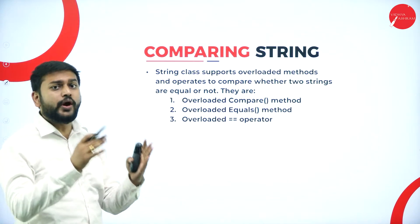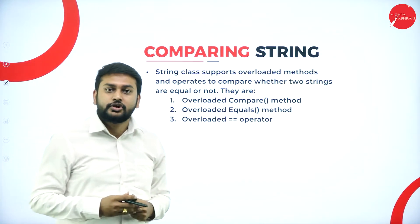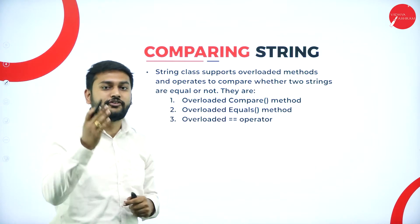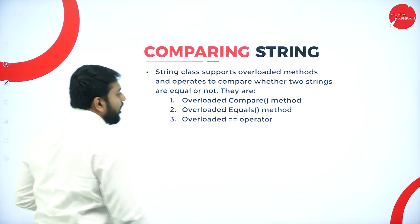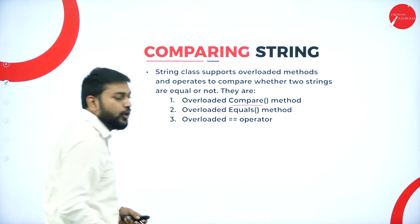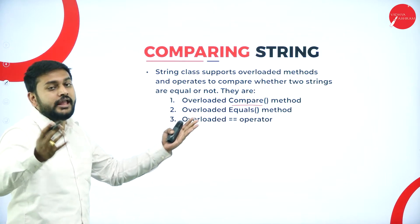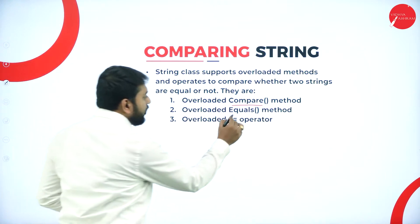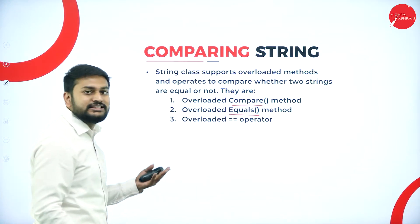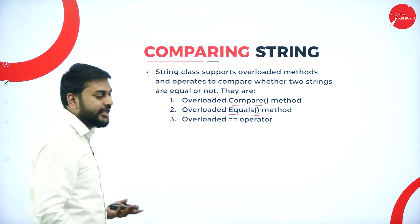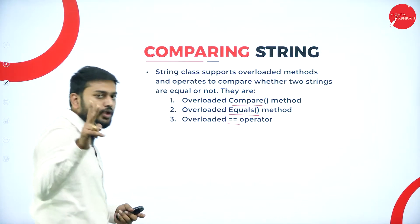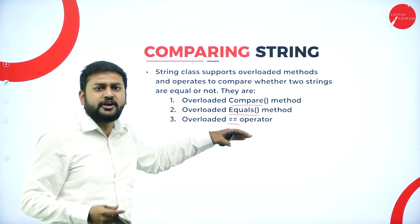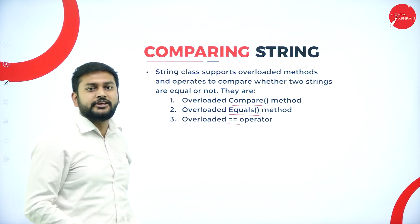Moving forward, how do I compare two strings? Basically, I follow three different methods. The first one is the compare method. The second method is the equals method. And then I will be using the double equals-to operator. How exactly all three are different from each other is what I will be explaining now.